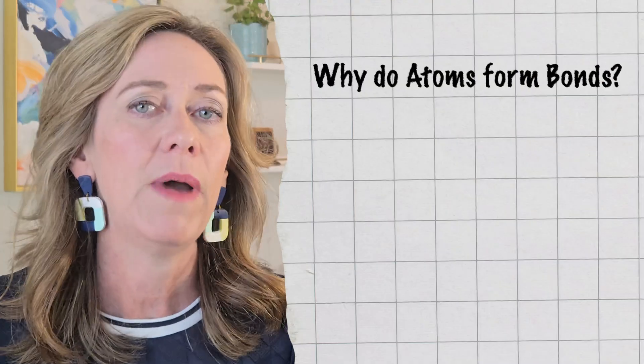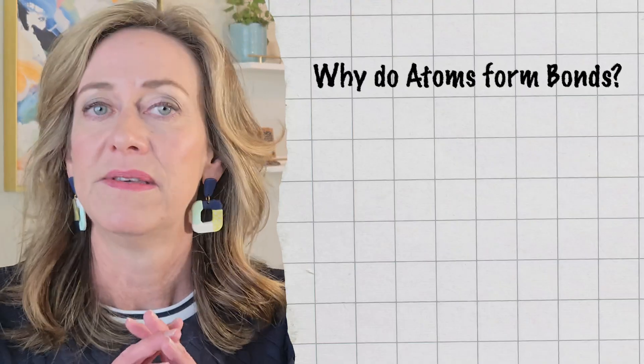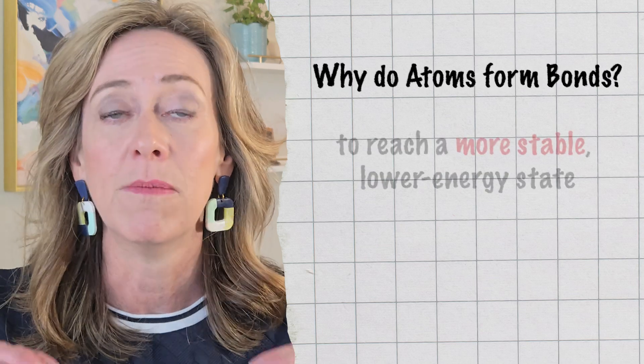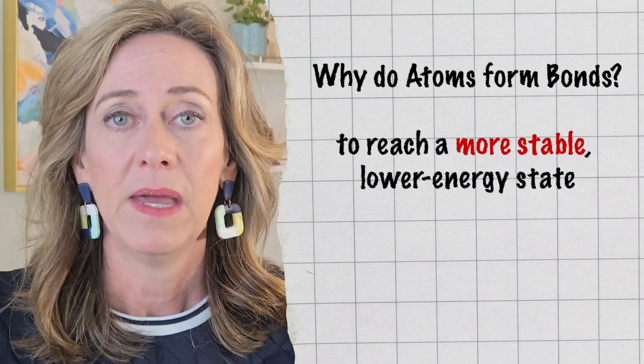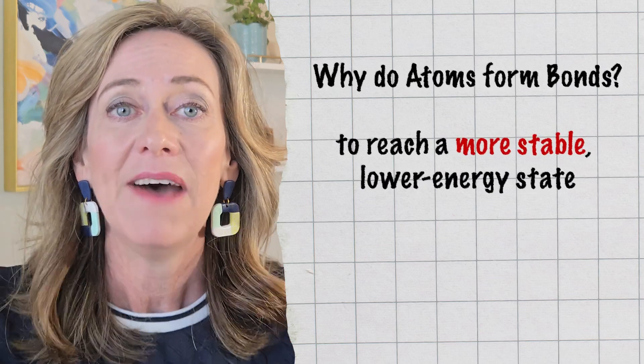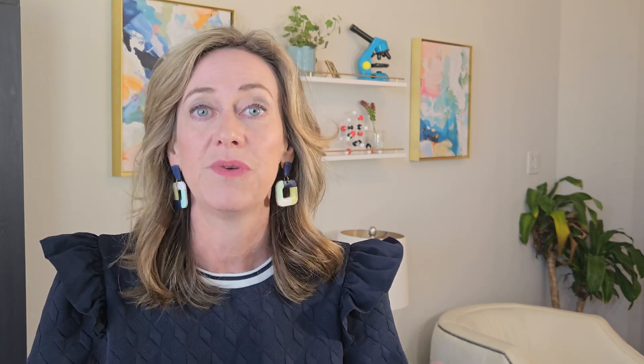Why do atoms form chemical bonds? It's all because of energy — to achieve a more stable energy level. By having a full outer or valence shell, they're more stable. Some atoms will gain or lose electrons to fill their shell, and when they do, they have an unequal number of protons versus electrons. This creates an ion.